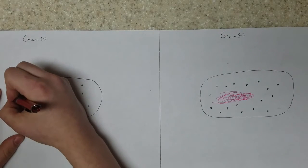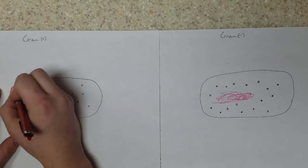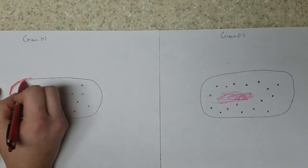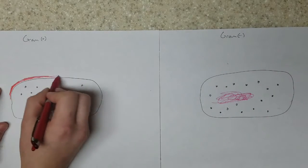And here I'm drawing the cell wall around a gram-positive bacteria. A gram-positive bacteria has a thicker cell wall than a gram-negative bacteria.